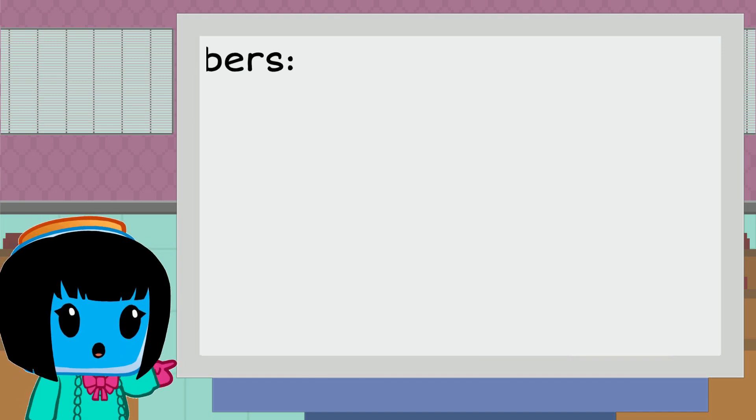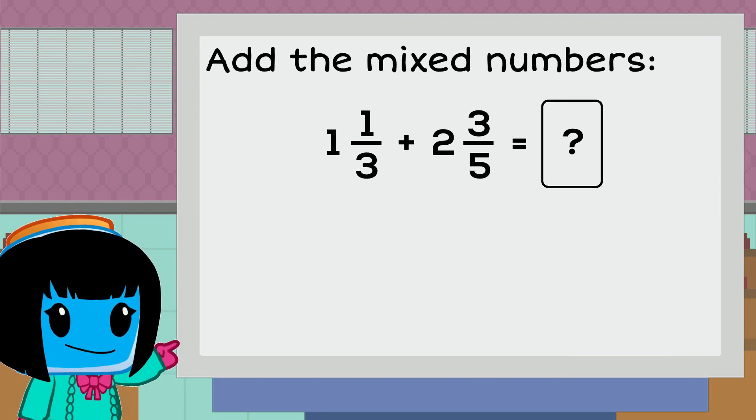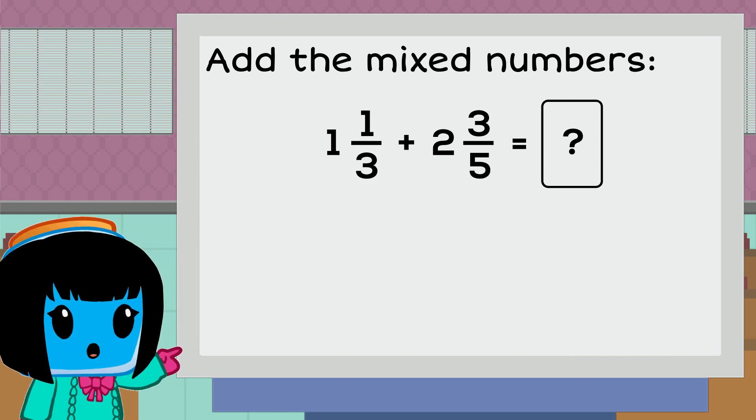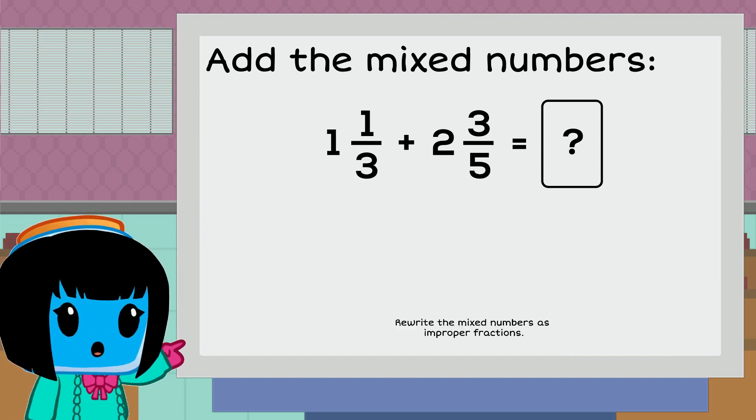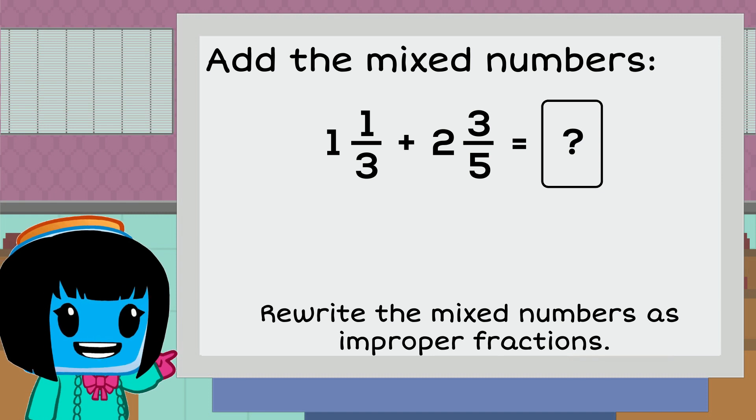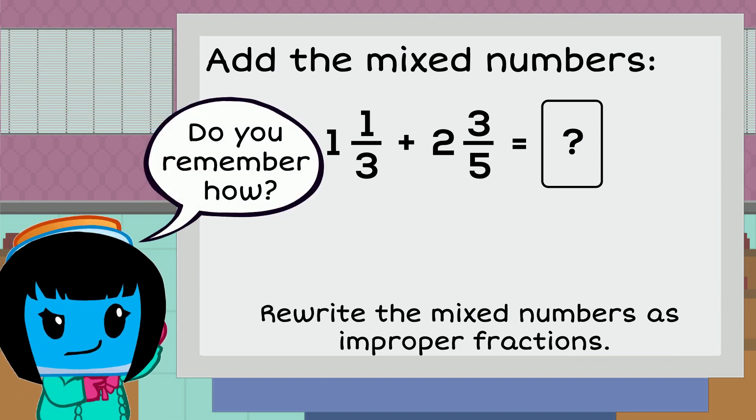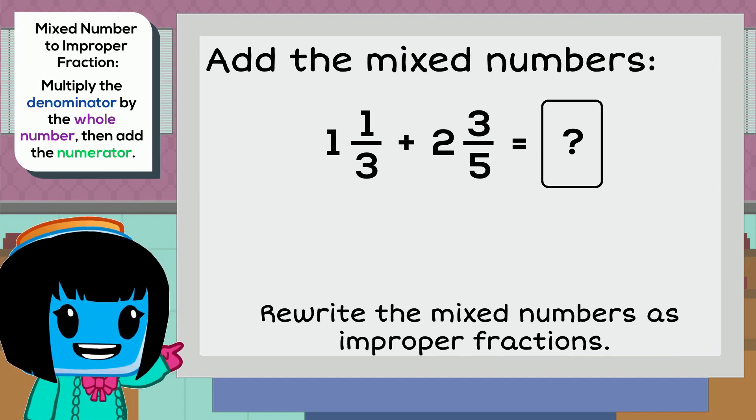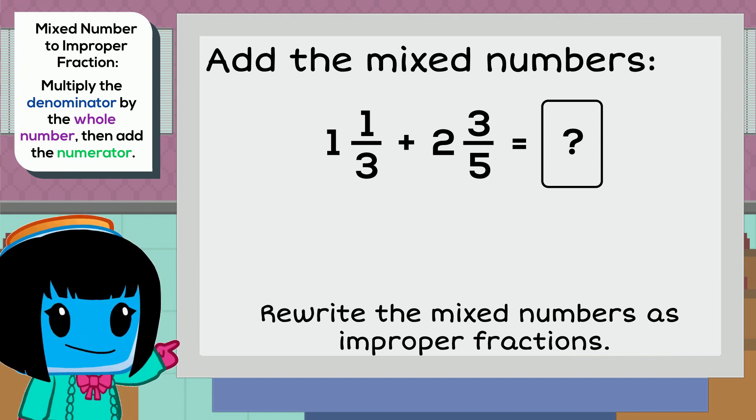In the next example, we'll be adding mixed numbers. Our mixed numbers have unlike denominators. To make them easier to add, we can rewrite our mixed numbers as improper fractions. Do you remember how to do this? To change a mixed number to an improper fraction, we multiply the denominator by the whole number and then add the numerator.